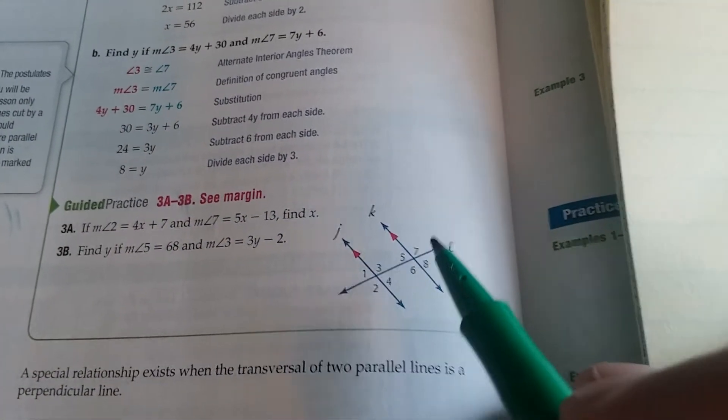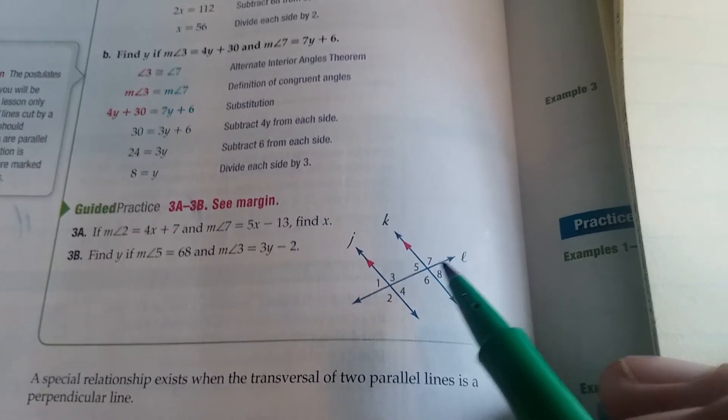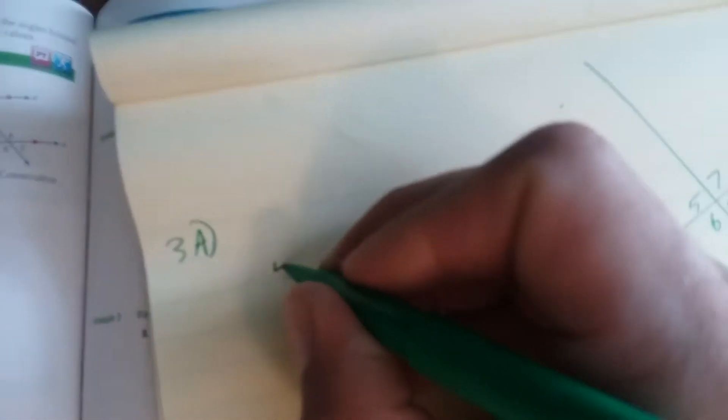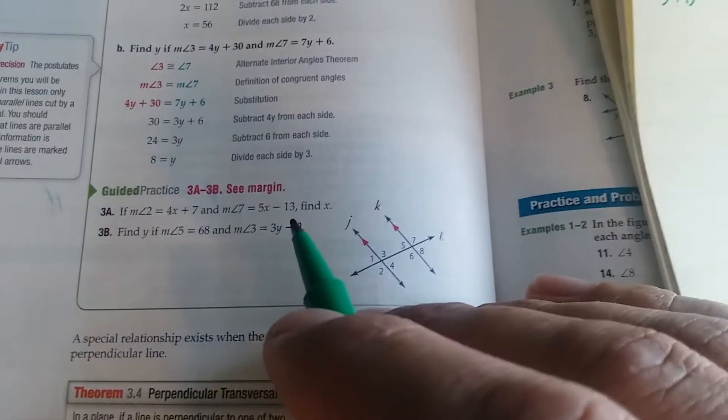Notice that angle 2 and angle 7 are alternate exterior angles so we can just set these equal to each other. So 4x plus 7 is equal to 5x minus 13.